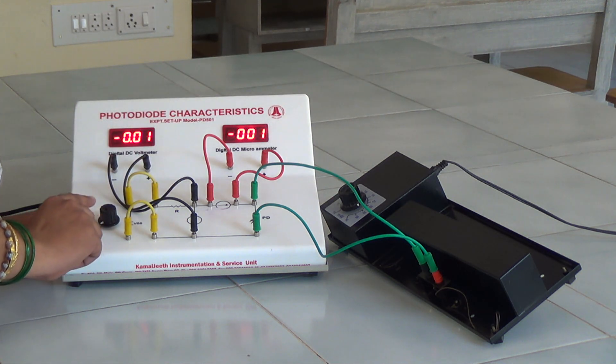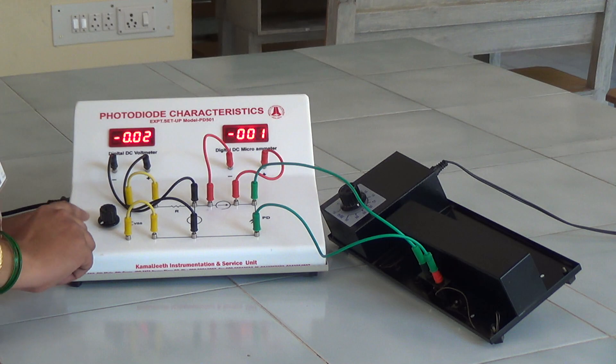And the graph is plotted in the third quadrant by considering the voltage along x-axis and the microammeter reading along y-axis for the three trials that we have noted in the tabular column.